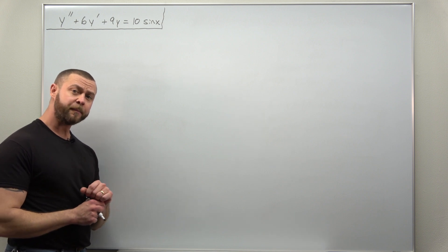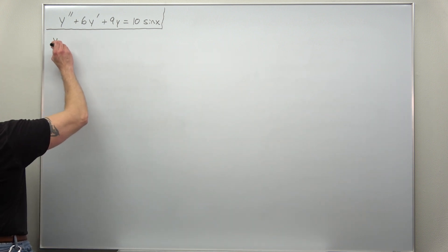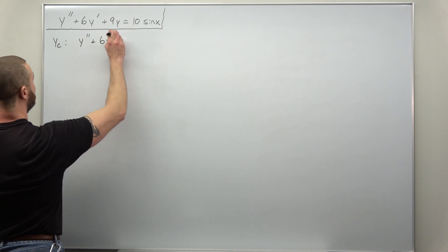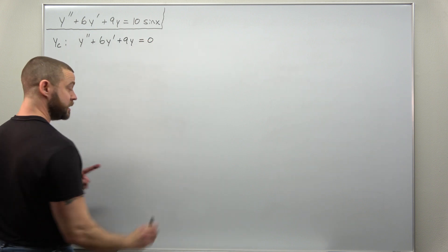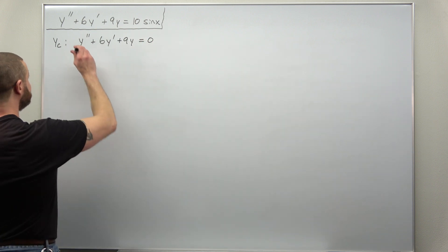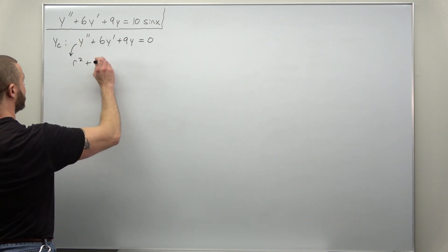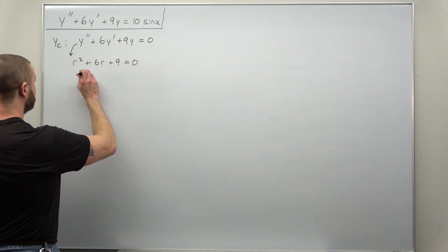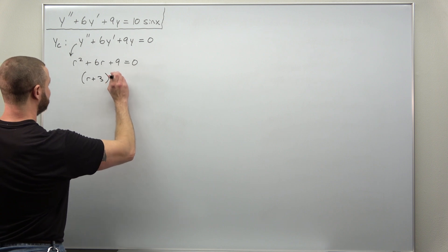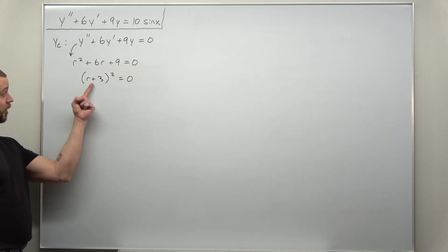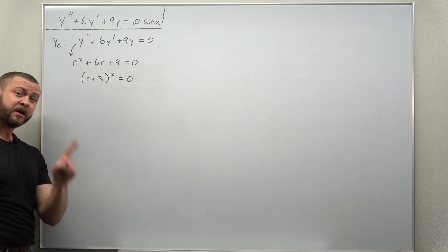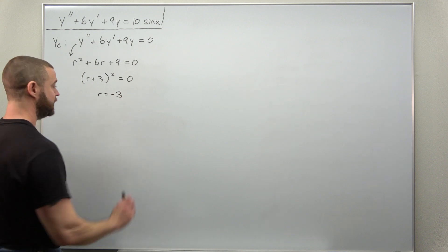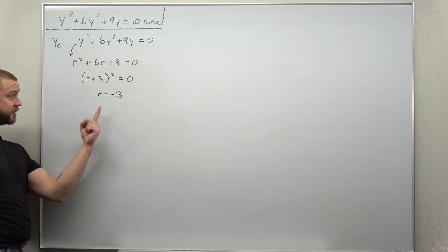Your first step, always start by finding the complementary solution. We're going to solve the homogeneous ODE where the right-hand side equals zero. So we solve y double prime plus 6y prime plus 9y equals zero. We can convert to the characteristic equation r squared plus 6r plus 9 equals zero, which factors as r plus 3 squared. The square tells us we have a repeated real root. The single value of r that we get is negative 3 and that exponent 2 tells us this root is repeated.